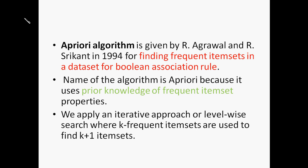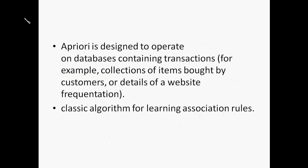This is the Apriori algorithm. It is an iterative approach, also called a level-based search. We are learning about the k-frequent items — when we have two frequent items, we generate three frequent items. We operate the Apriori algorithm with data-based transactions. This is a classic algorithm and its association rules.